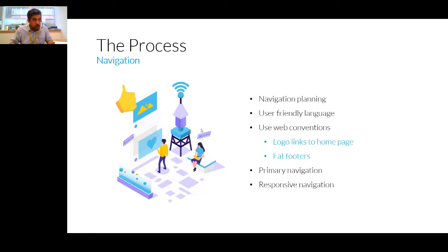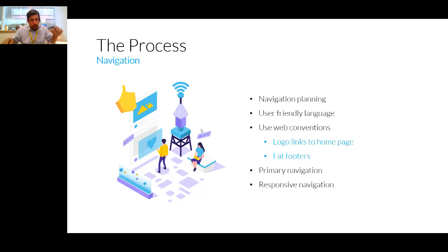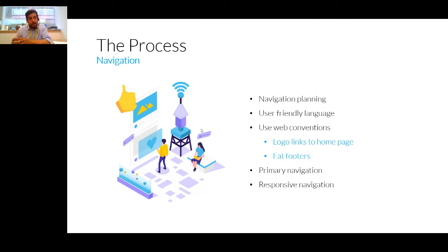Use friendly language — you can be friendly, open, and have the language on your website represent you and your brand. Stick to web conventions — users now expect a navigation bar at the top, the logo to link to the homepage, and a fat footer at the bottom with address details and company number. Pick your primary navigation: what are your top five or six signposts? And always consider what your responsive journey looks like — how is this navigation going to translate into mobile, tablet, and varying screen sizes?